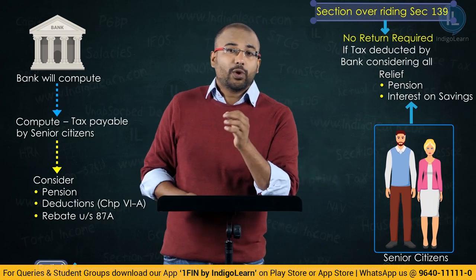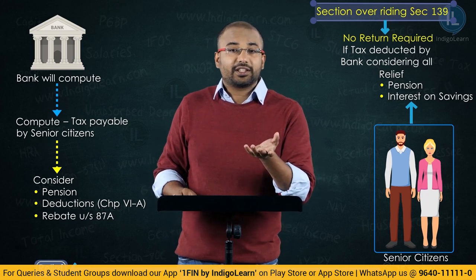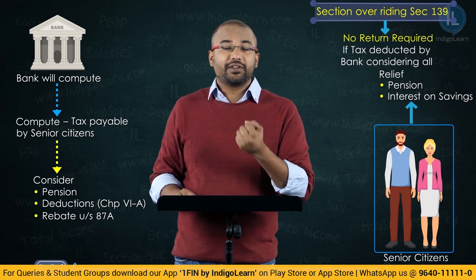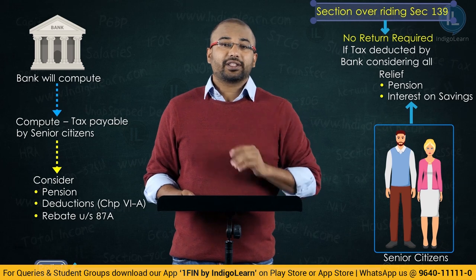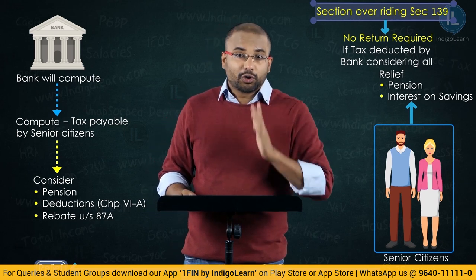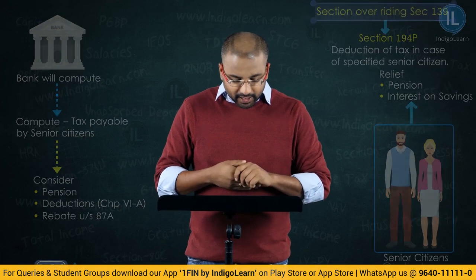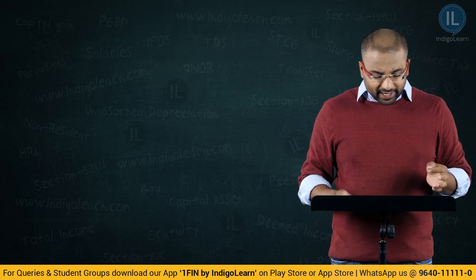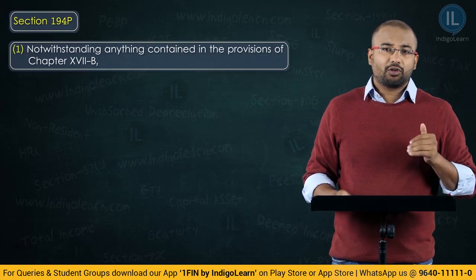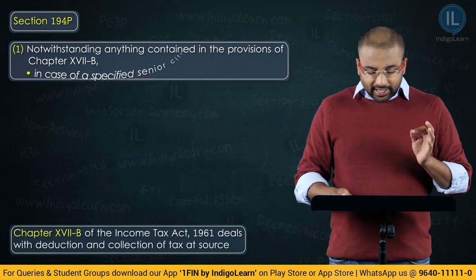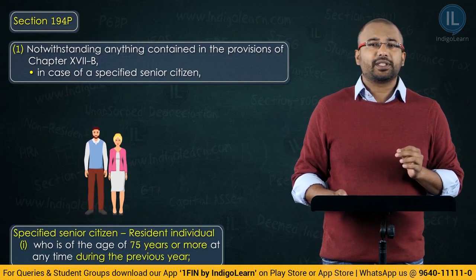So if somebody asks you which section says that a senior citizen who has attained the age of 75, who has given a declaration to the bank, need not file income tax returns — it is this section. Let's read Section 194P. Subsection 1 says: notwithstanding anything contained in the provisions of Chapter 17B — it's an overriding provision to the whole chapter — in case of a specified senior citizen.